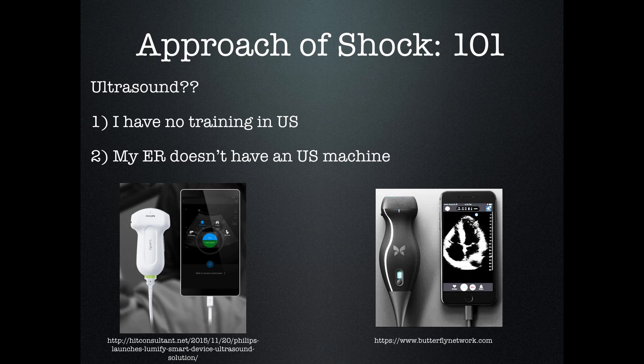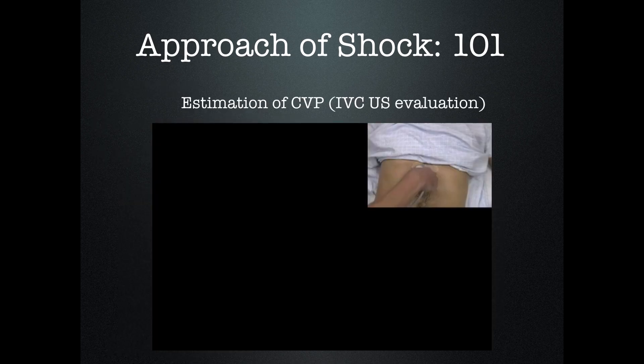Here are two machines that have just come out. The one on the right is the Butterfly — it's going to cost $2,000 and plugs into your iPhone, coming out this year. The other is the Lumify, which we use at our shop — it's $4,000 and plugs into an iPad or a Samsung pad. If you can't afford it at the hospital, they should be able to work out $2,000 for an ultrasound machine. There's really no excuse not to have one when working with patients in the ER.